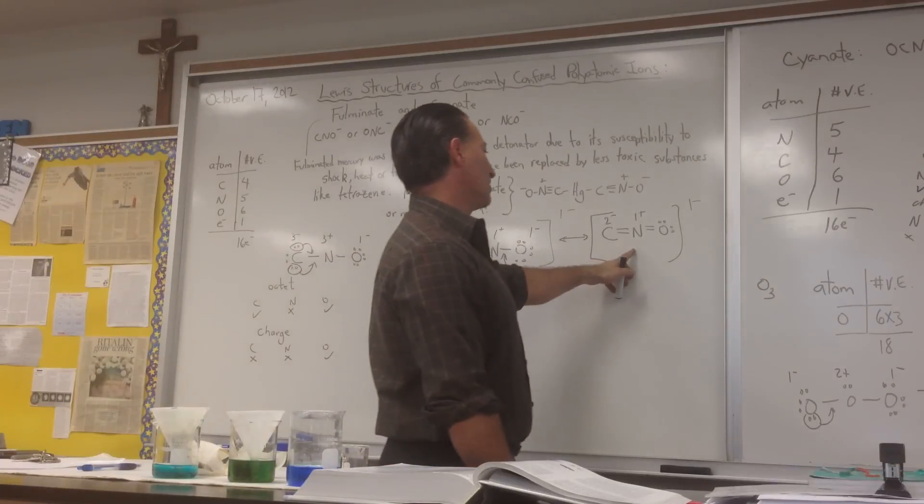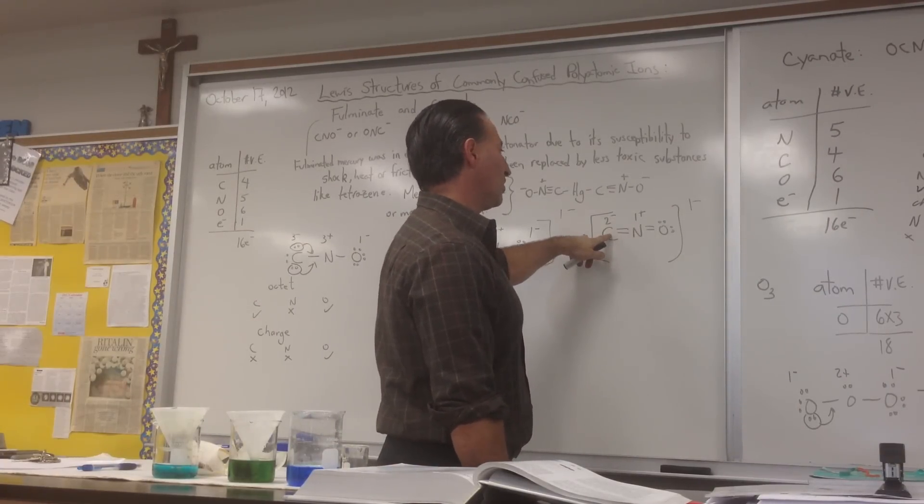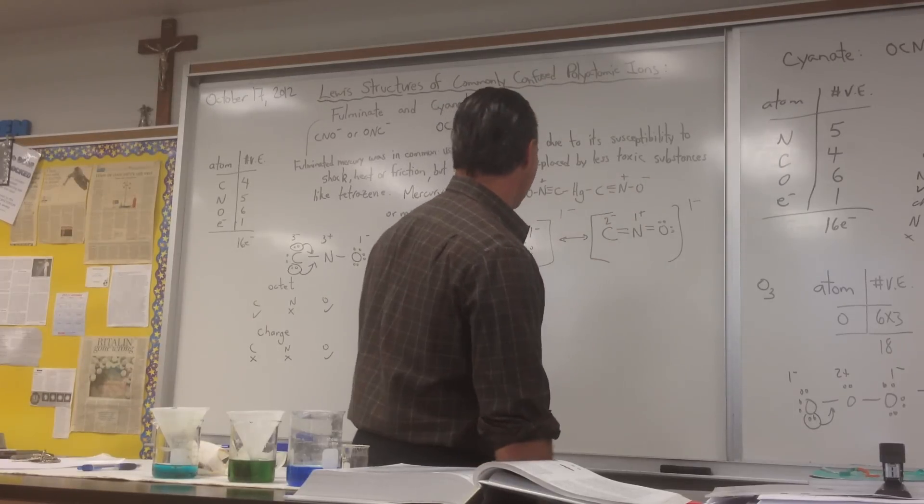Here's another alternate structure that I tried to draw to make a better Lewis structure, and I ended up having a negative 2 formal charge on carbon, so this is not a likely good structure.